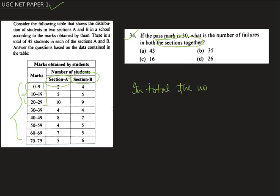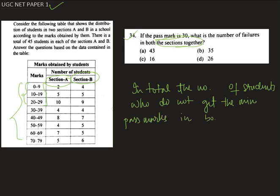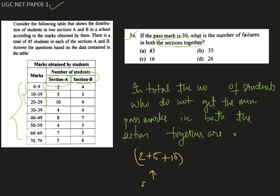Therefore, in total, the number of students who do not get the minimum pass marks are 2 plus 5 plus 10, this is for section A.